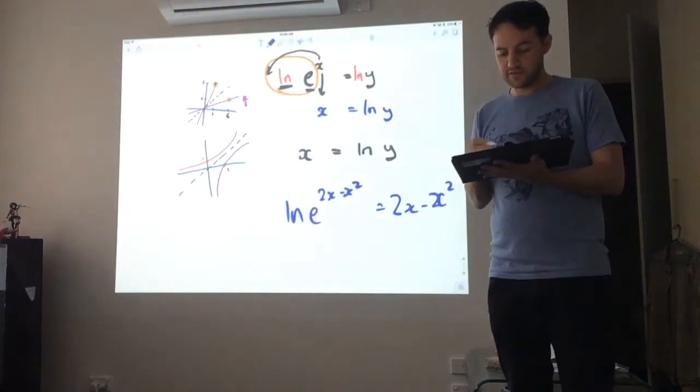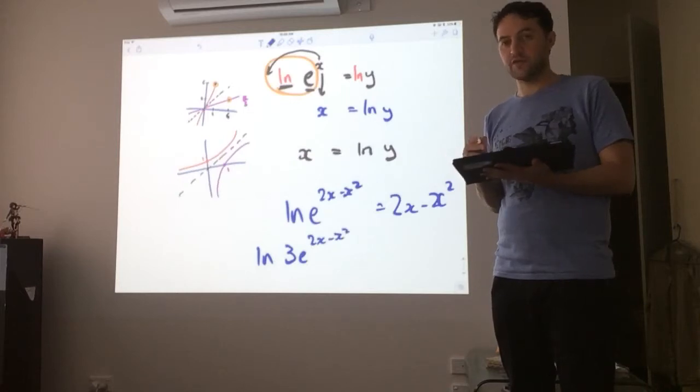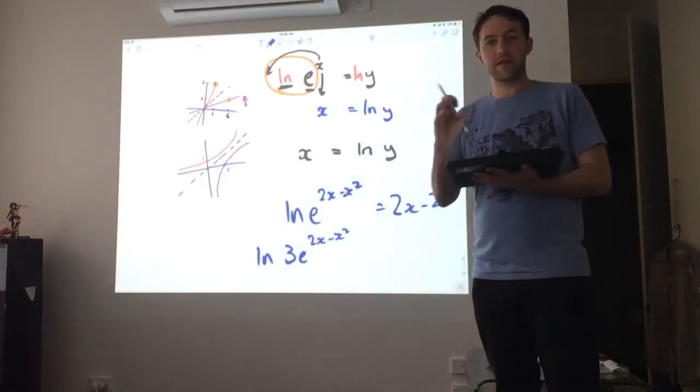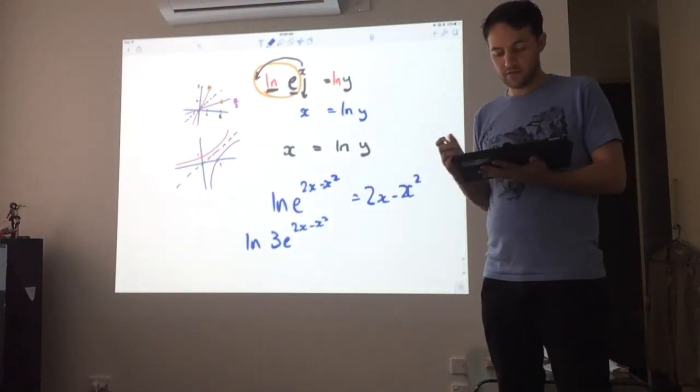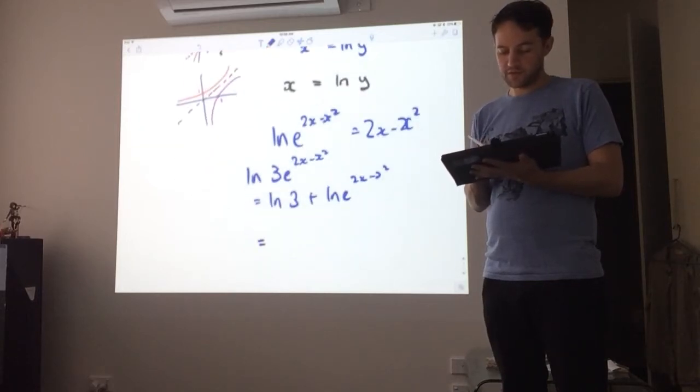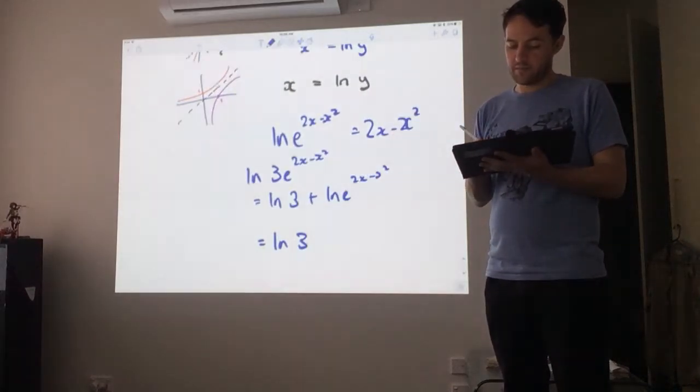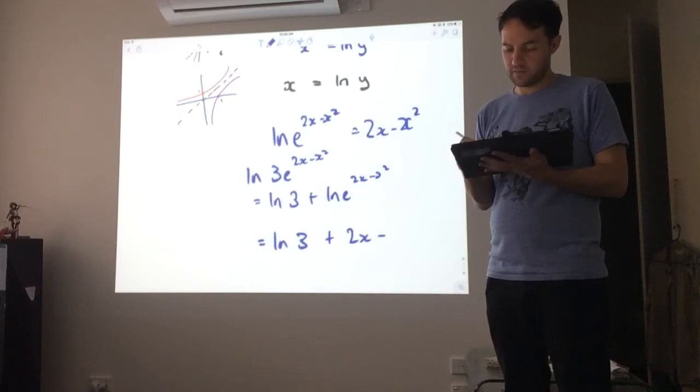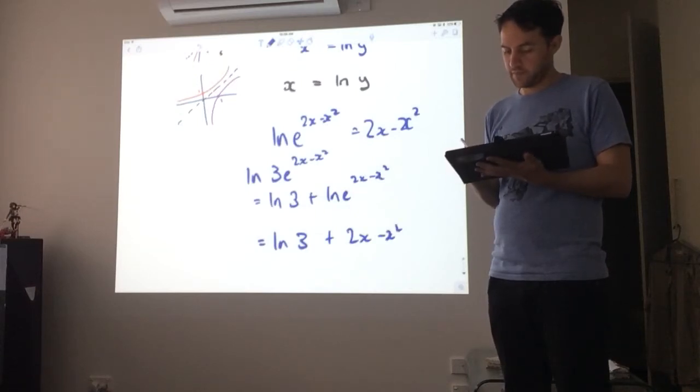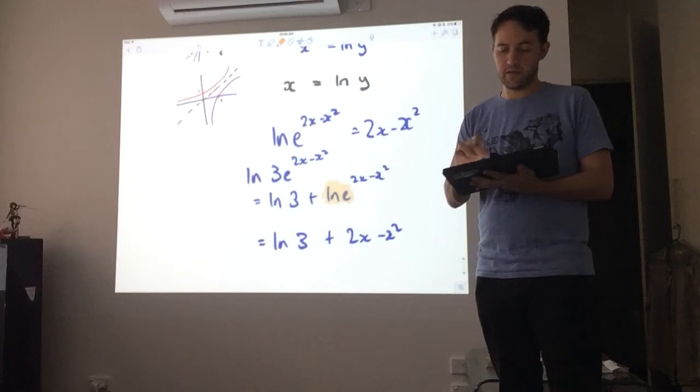So something like log of e to the 2x minus x squared just equals 2x minus x squared. If we have other things involved, so if we have a log of 3e to the 2x minus x squared, we've got a multiplier of 3 in there, we need to be sometimes a little bit careful. In this case, not too careful because this is just the same as log of 3 plus log of e to the 2x minus x squared. And so this would be equal to log of 3 as a constant, a little bit more than 1, and then plus this 2x minus x squared. So the log and the e together cancel out.